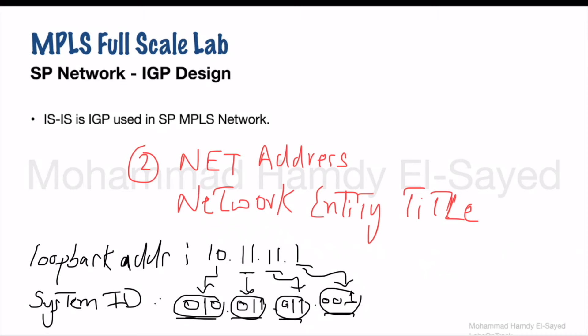ISIS routers can duplicate their System ID as long as they reside in different areas. But if they reside in the same area, they must have a unique System ID. Since we have only one area — Area 3 — for the MPLS full-scale lab, all routers must have a unique System ID. Of course, all routers will use the same NSEL value of 00.